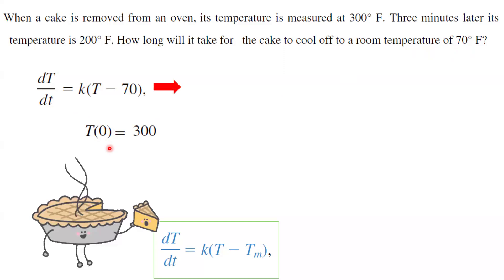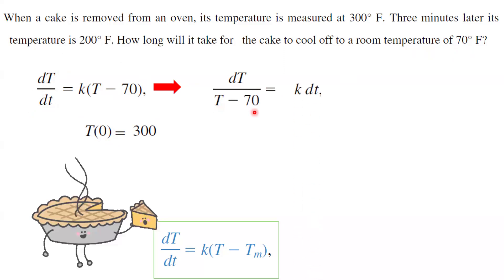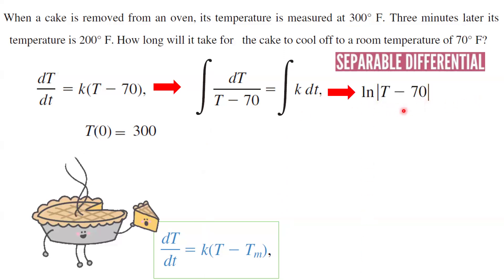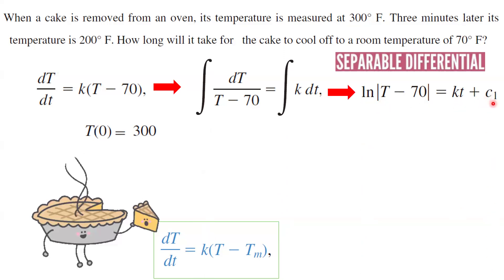Note that this is a separable differential equation. We can write it as dT over (T minus 70) on the left-hand side, and K dt on the right-hand side. Since it's a separable differential equation, we can take the integral of both sides. The integral on the left-hand side is ln of the absolute value of T minus 70. On the right-hand side, we have Kt plus a constant of integration C sub 1, since we will end up combining multiple coefficients.